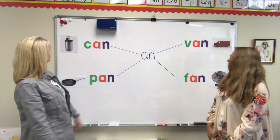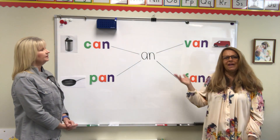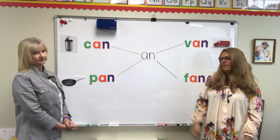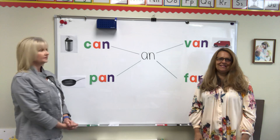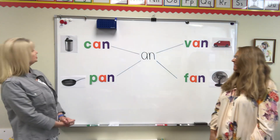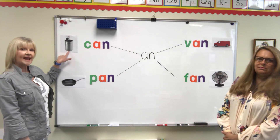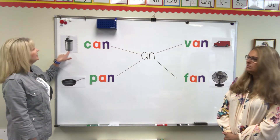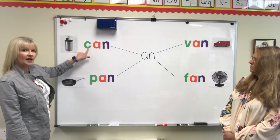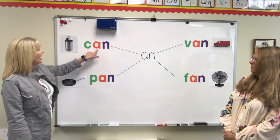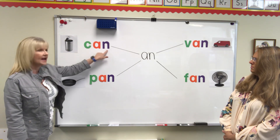Today we are going to do a little review on the AN family — A-N. We're going to start out with a picture of a can. Can has three letters: C-A-N. Can.